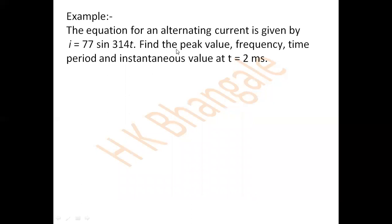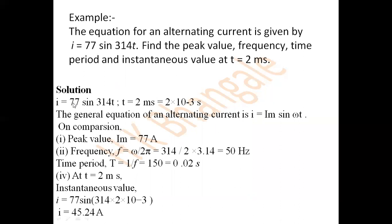The given equation is i = 77 sin(314t), where t = 2 ms = 2 × 10⁻³ seconds. The general equation for alternating current is i = Im sin(ωt). Comparing with the given equation: Im = 77 ampere and ω = 314. Frequency f = ω / 2π = 314 / (2π) = 50 Hz.